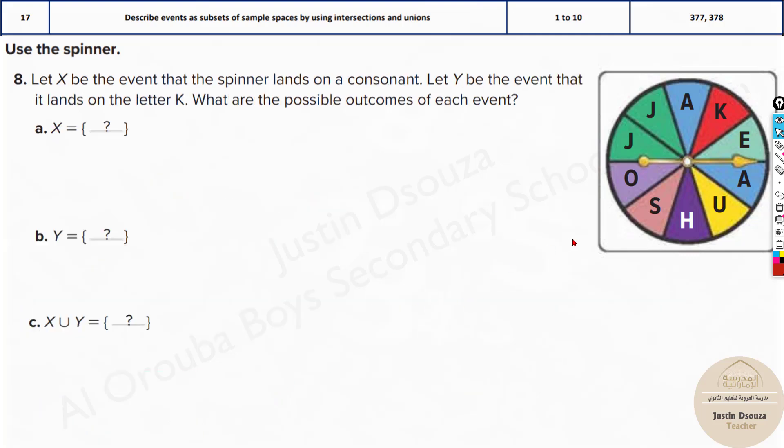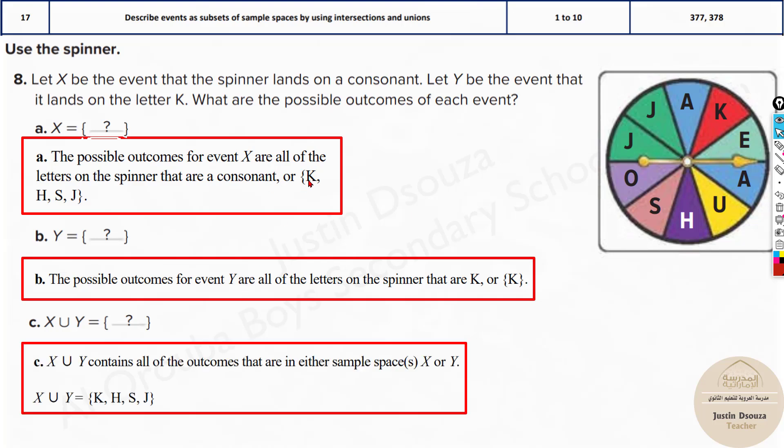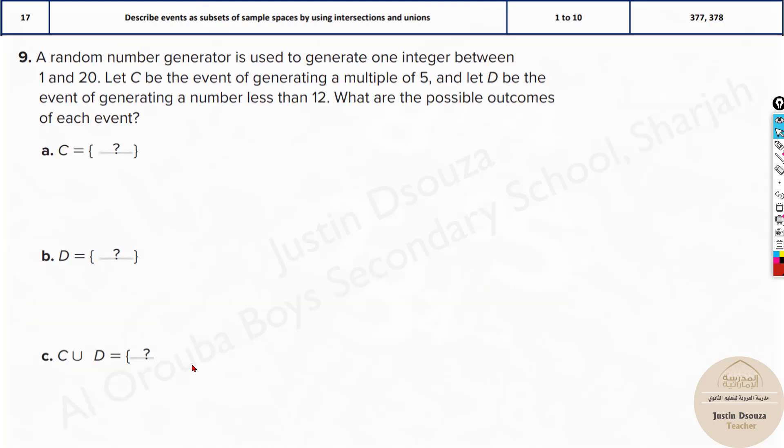Now the next problem is again the same. But it's just they have asked consonants this time. So consonants is anything other than vowel. It's K, H, S, J. So those are the consonants. And over here, what is the next one? It lands on K. Landing on K is only one possibility. That's K. And write all of them together. But here, K is already mentioned in the set A. So you just write the set A. Because we don't write K, K again. Just once.